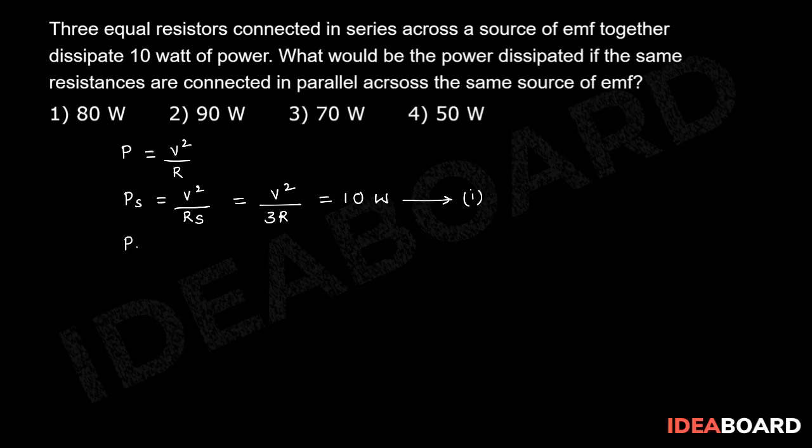Similarly, in the parallel combination, this is V square by Rp, that equal to V square by the three identical resistors connected in the parallel combination. Effective resistance would be R by N, that is three resistors. So this is R by 3. Taking this is the second equation.